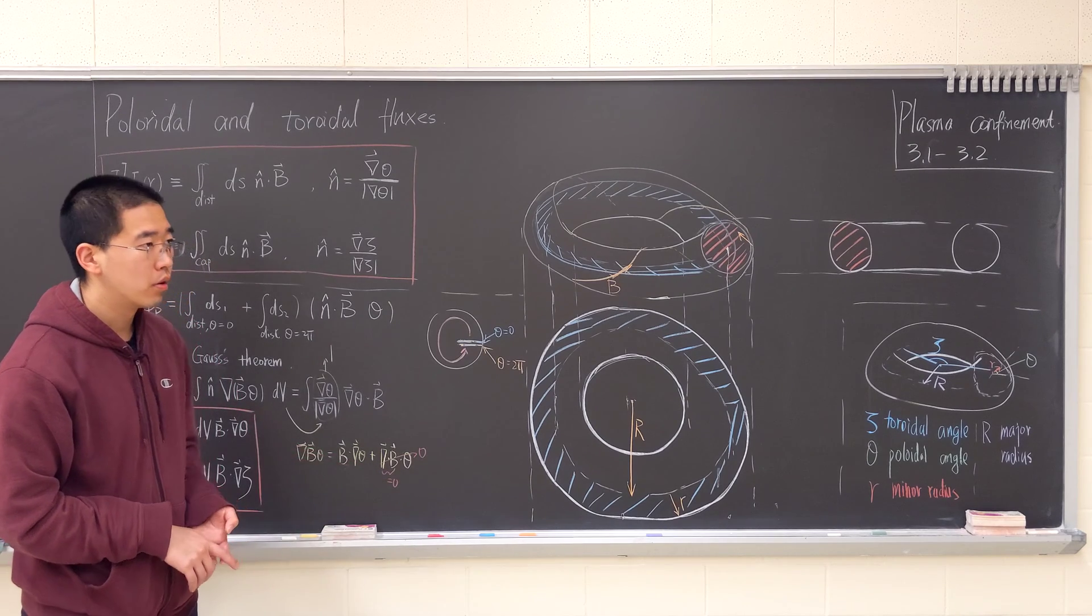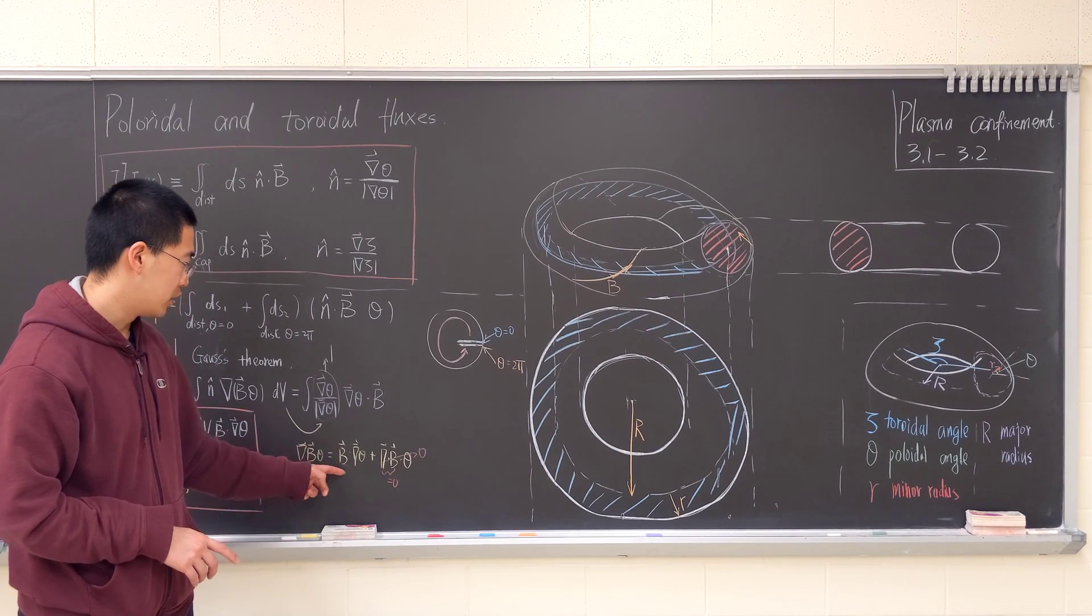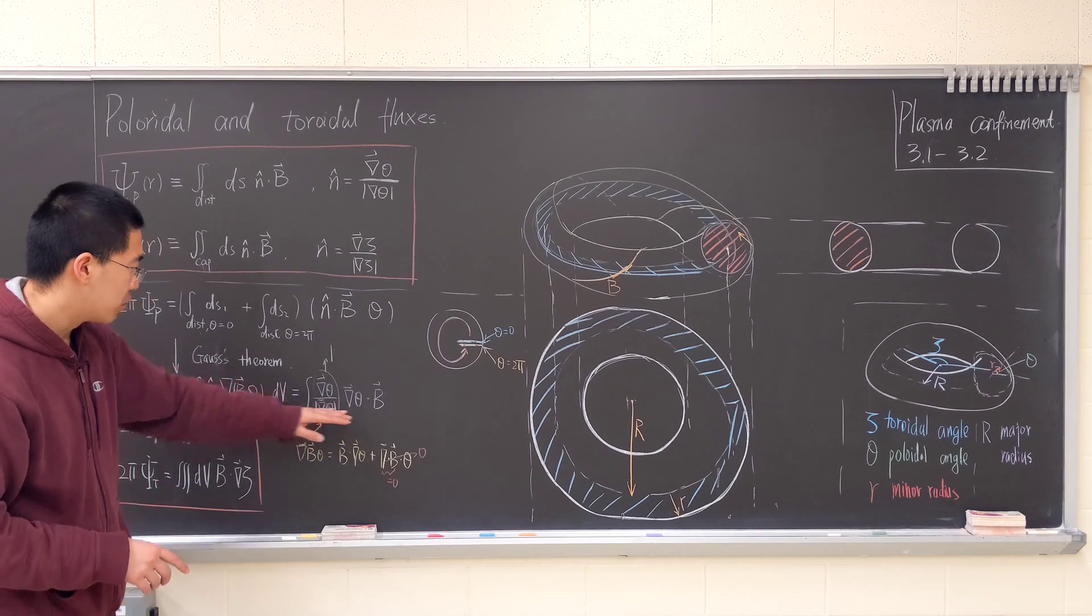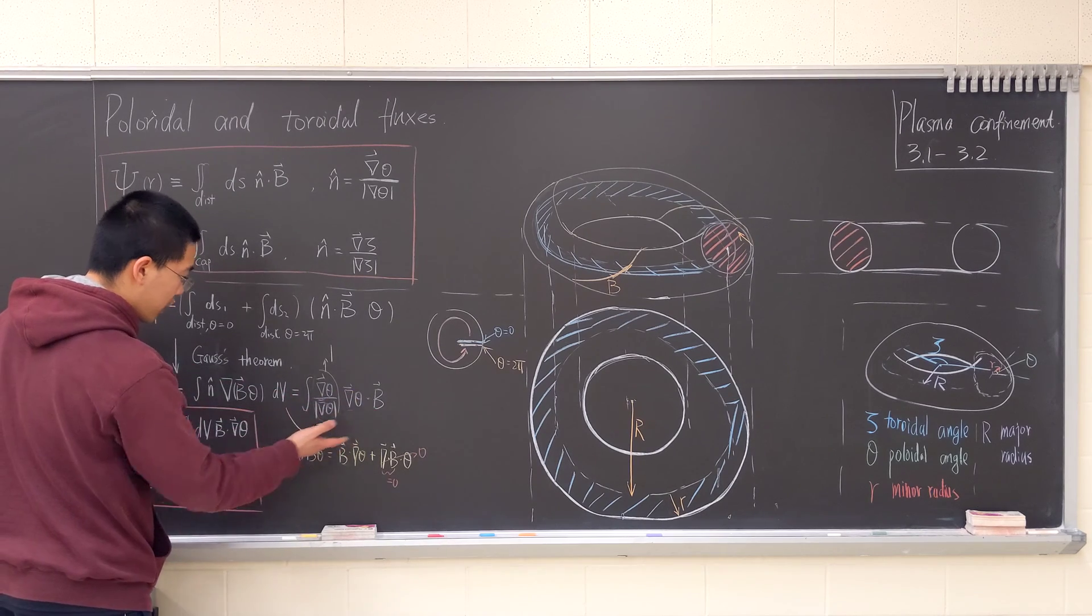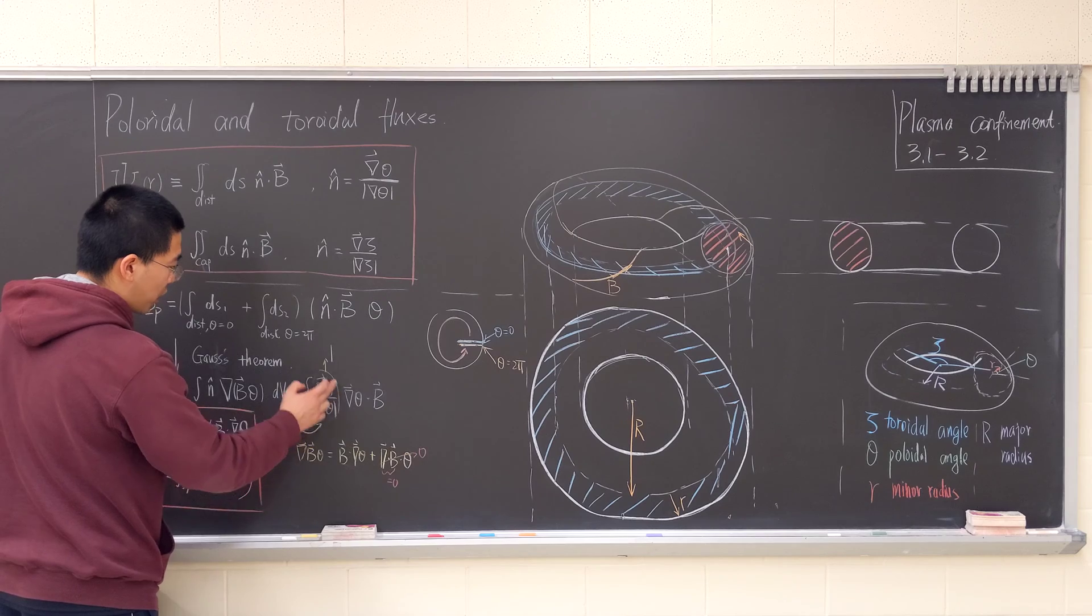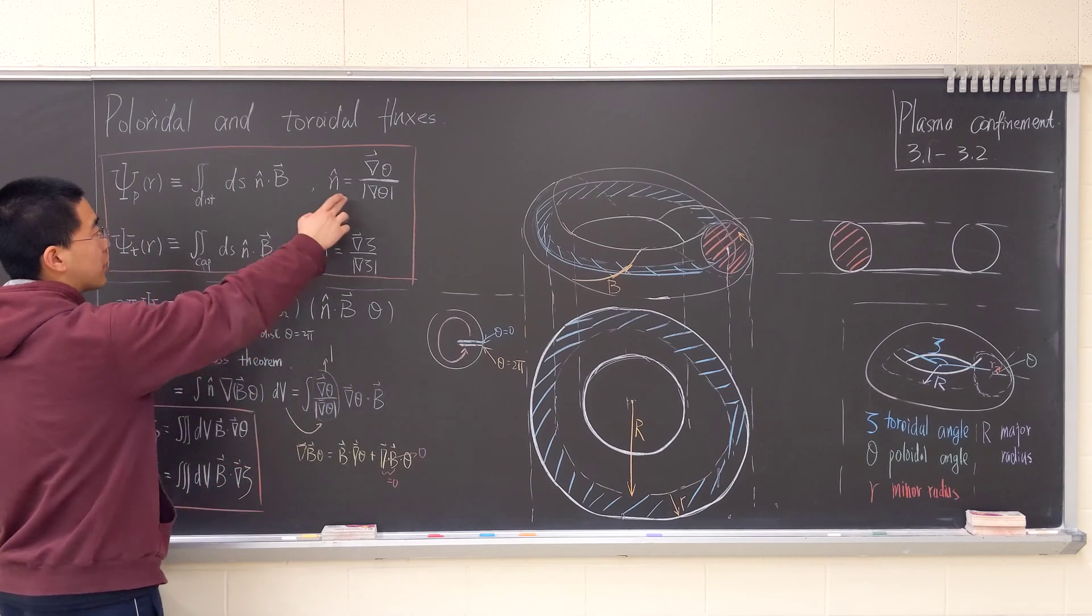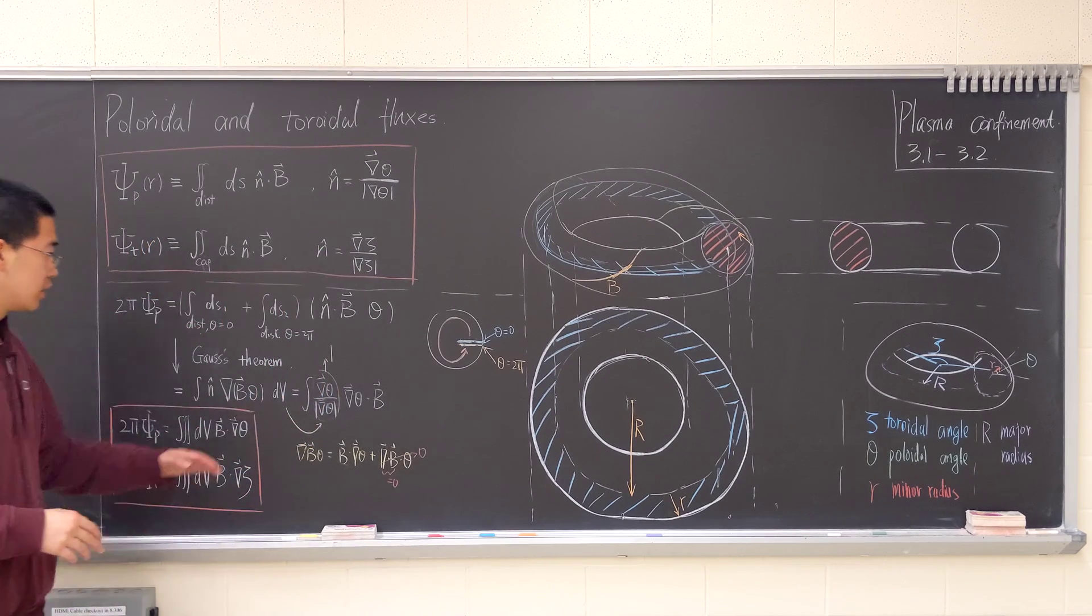The div B is zero. So we're left with this. So we write it, write the poloidal flux in terms of this. This becomes one, based on the definition of n nabla. And then we have another expression, the poloidal and poloidal fluxes, in terms of volume integral.